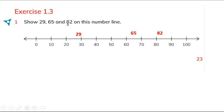For 82, count eight tens on the number line: zero, one ten, two tens, three tens, four tens, five tens, six tens, seven tens, eight tens. That means 82 will be after 80. Locate where 80 is on the number line and place 82 right after 80.